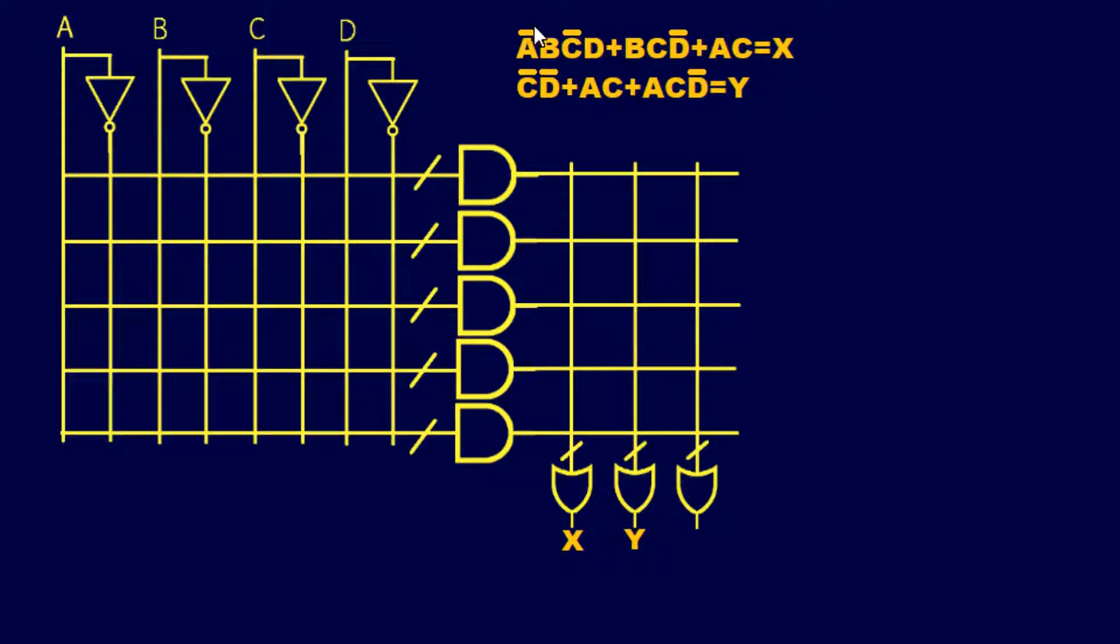For example, I'm going to do this first one: A NOT B, C NOT D. So A NOT, I'm going to start with this first, this is going to be my first AND gate with A NOT B, C NOT D. So A NOT, B, C NOT, and then D. So right there on this first AND gate, it should come out to be A NOT B, C NOT D. All right, so that one's done.